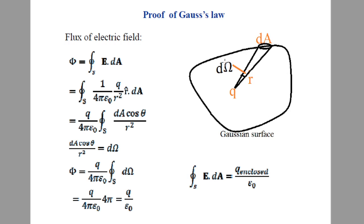Integrating over the entire surface, the angle between dA and R̂ will vary, and the distance R will also vary since the surface is not spherical. The term dA · R̂ becomes dA cosθ / R², where θ is the angle between the normal to the surface and the radius vector R̂. The quantity dA cosθ / R² represents dΩ — the solid angle subtended by the area element at the position of the charge.